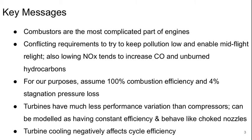For our purposes we're going to assume 100% combustion efficiency and a 4% stagnation pressure loss through the combustor. Turbines have much less performance variation than compressors do, and they can be modeled as having constant efficiency and behaving like choked nozzles in most cases. Turbine cooling negatively affects the cycle efficiency.